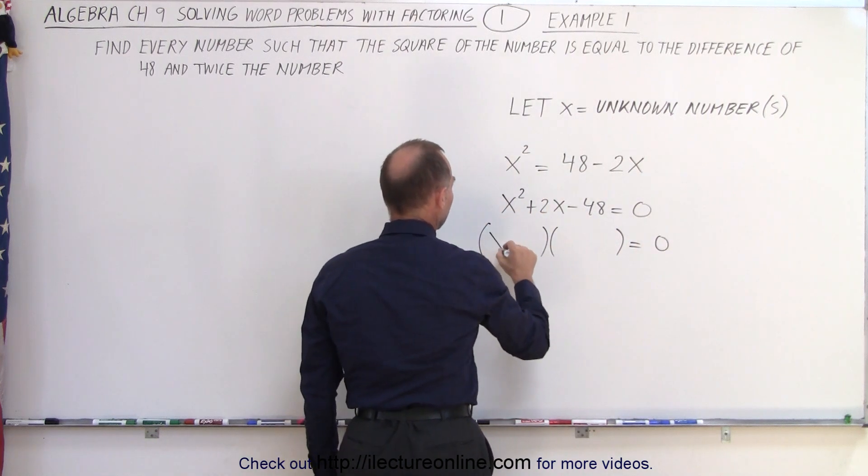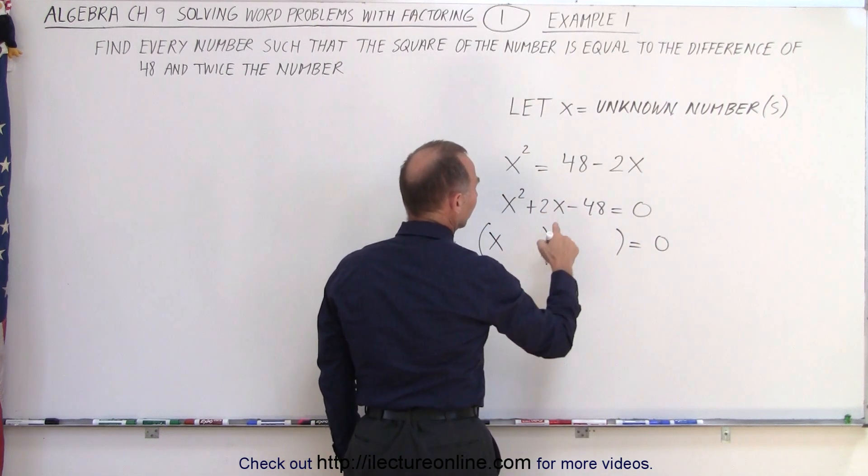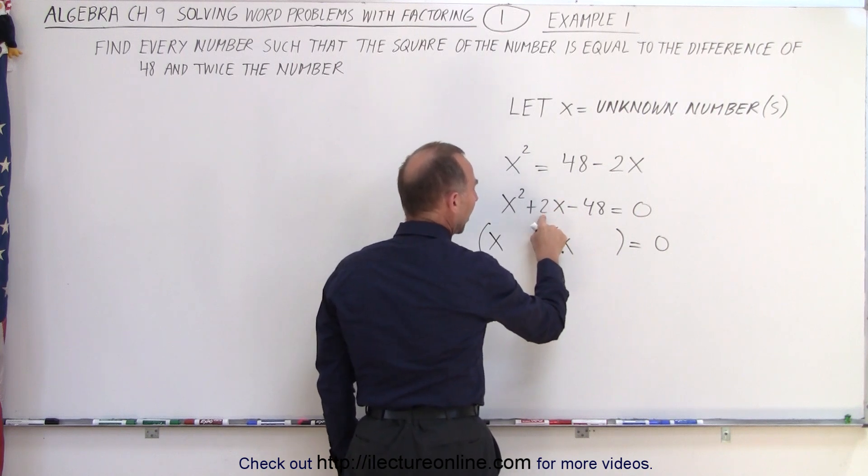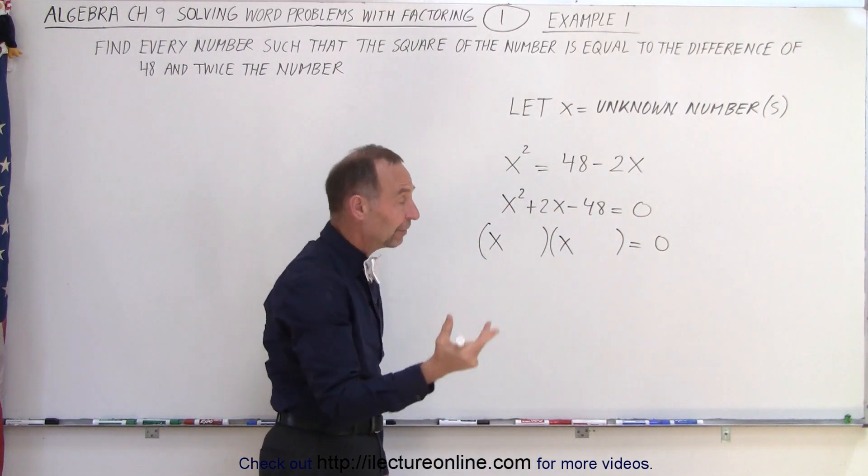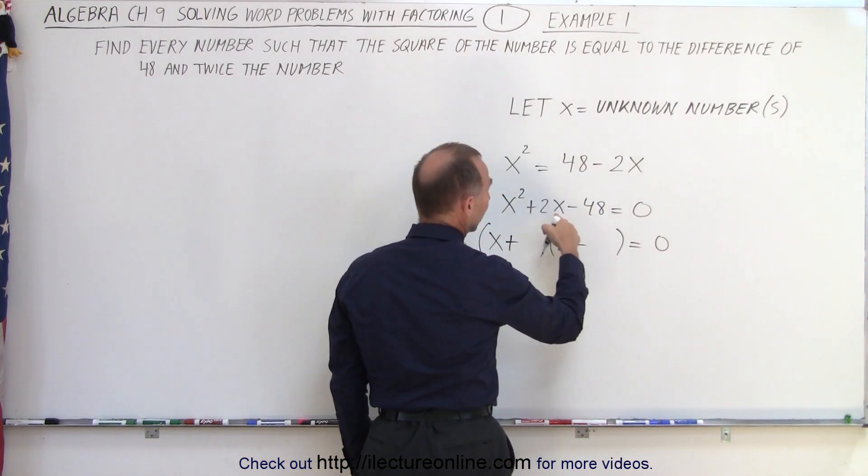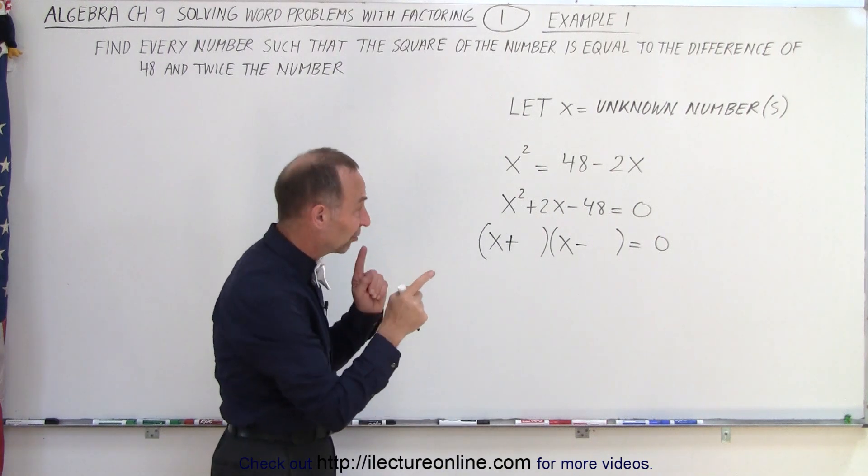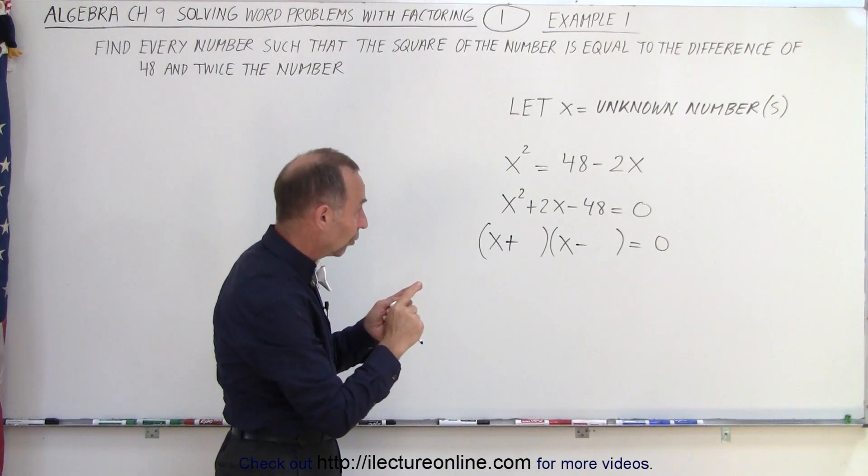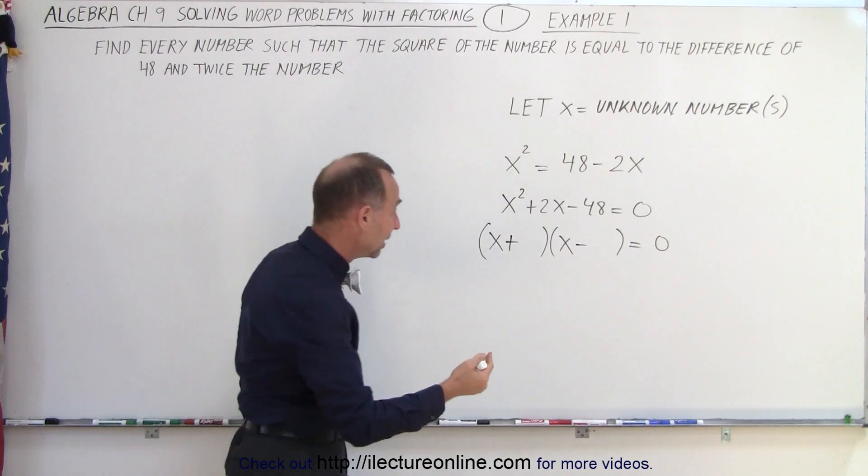So we're going to have two binomials multiplied together equals 0. For the first term, we need an x and an x. For the signs, notice we have a negative here and a positive there. That means one positive and one negative number, such that the sum is 2 and the product is 48. They must differ by 2, and so 6 and 8 differs by 2 and multiplies to 48.